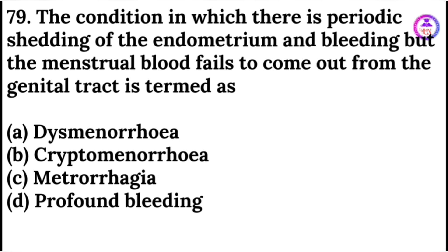The condition in which there is periodic shedding of the endometrium and bleeding but the menstrual blood fails to come out from the genital tract is termed as cryptomenorrhea.